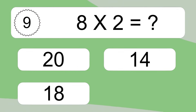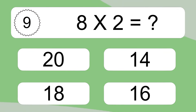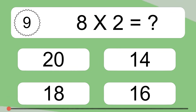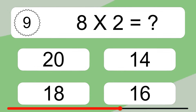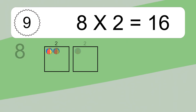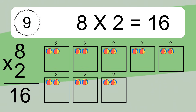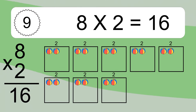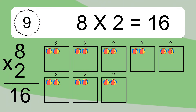8 times 2 equals what? 8 times 2 equals 16. We have 8 boxes, and each box has 2 colorful balls inside. If you count all the balls in all the boxes together, you will have 8 times 2 balls. This equals 16 balls.